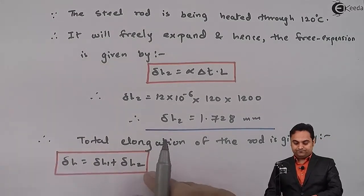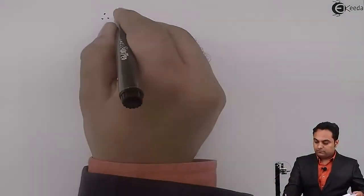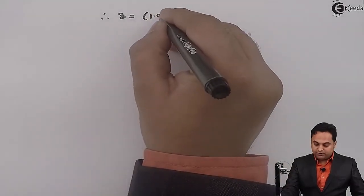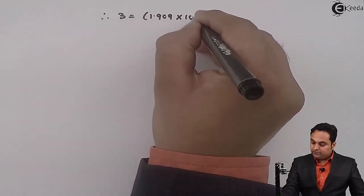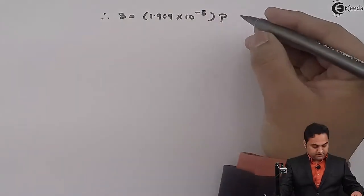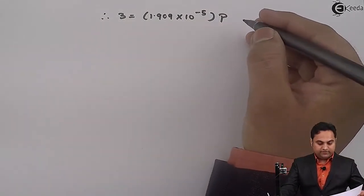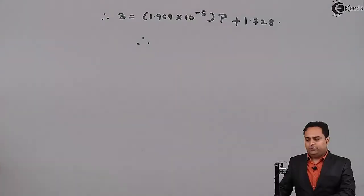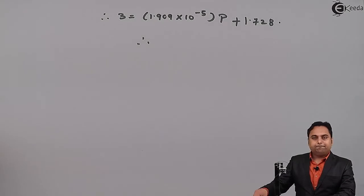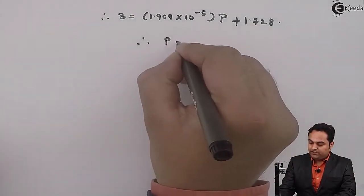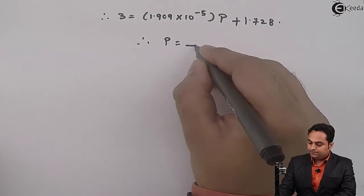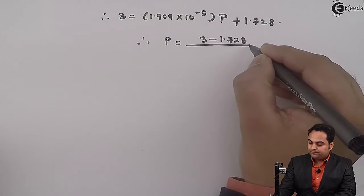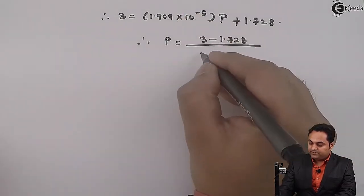Delta L1 we have found out, it was 1.909 into 10 raised to minus 5 times P, plus delta L2 we have calculated just now, it is 1.728. So now after getting this equation I can say that P will be equal to 3 minus 1.728 divided by this term, 1.909 into 10 raised to minus 5.